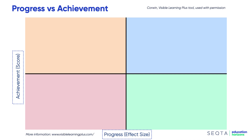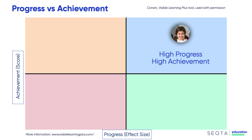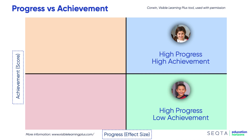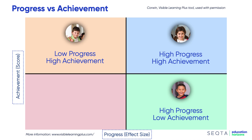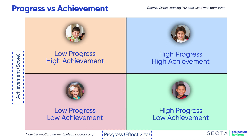We can start to look at where students fall. The blue box shows high progress, high achievement — students are to the right of the vertical and above the average achievement level. Students to the right of the 0.4 progress line have made great progress but are still below the average. Schools often find students with particular learning needs fitting here. The orange zone shows high achievement but not making the expected progress. And then finally the red zone shows low progress and low achievement — below average and insufficient progress.